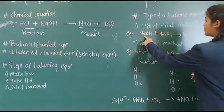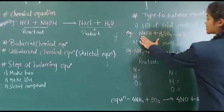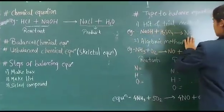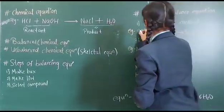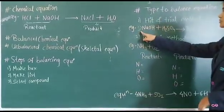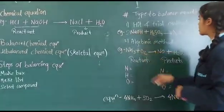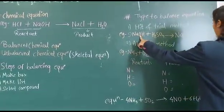To balance this, first we will see how many Na are here on the product side and on the reactant side. Here Na is 1, here are 2. So I need to write here 2. But this 2 is not only for Na, but also for O and H.